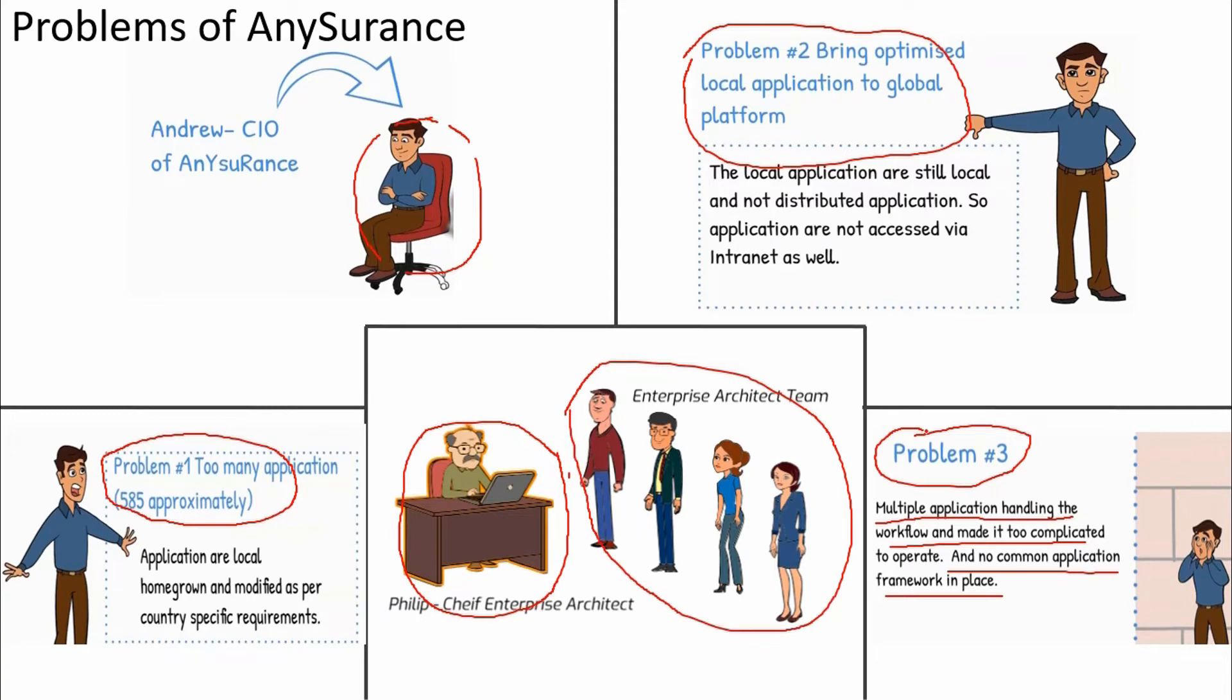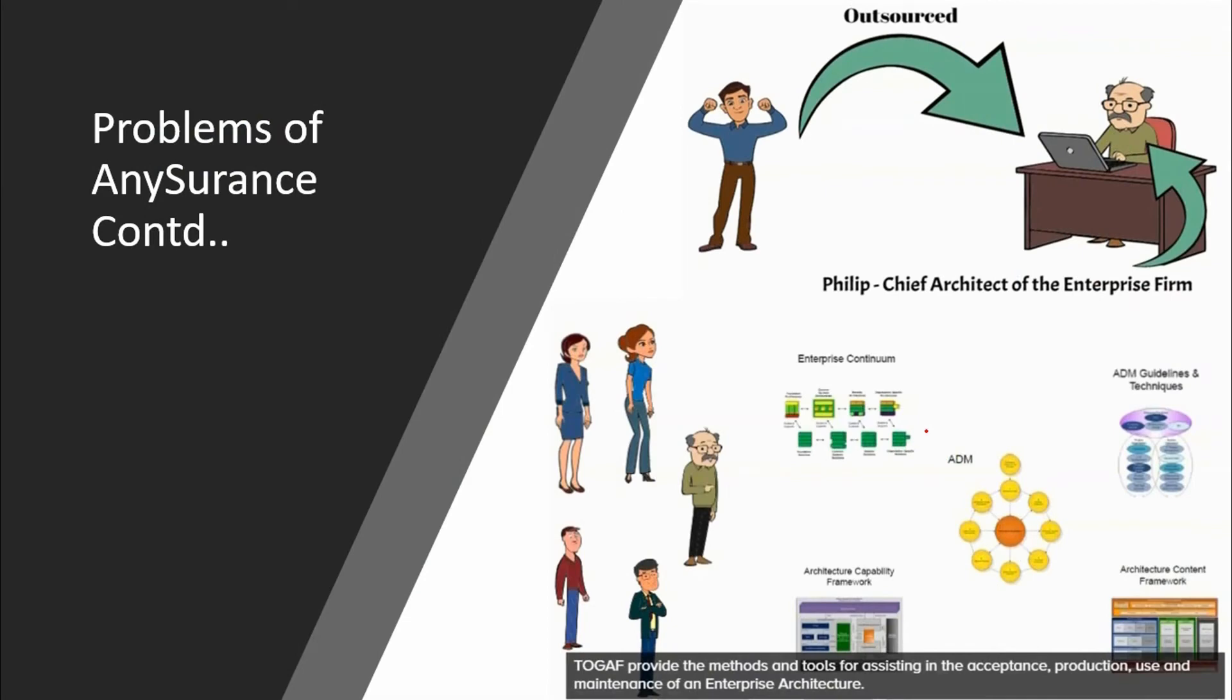Philip, the Chief Enterprise Architect, along with the team of enterprise architects, starts their preliminary work in this phase. Let's move to the next section. In Level 1 of this course, Philip's team has learned the concepts of Architecture Development Method, which is ADM, followed by Enterprise Continuum, Architecture Content Framework, Architecture Capability, and ADM guidelines. Here the team will apply all the concepts learned and design the preliminary phase.